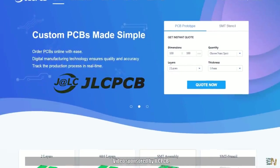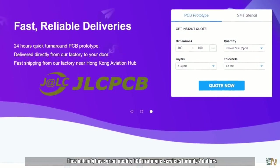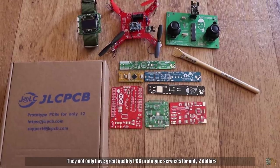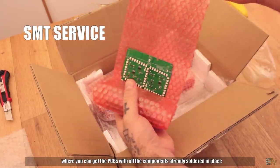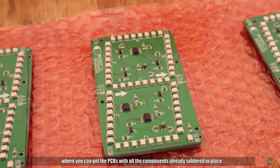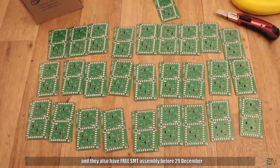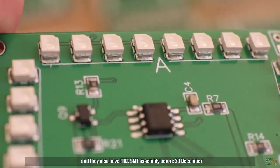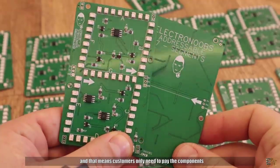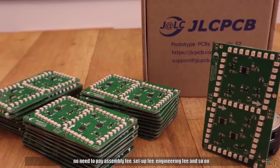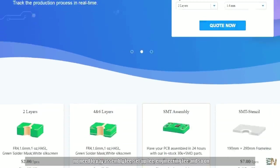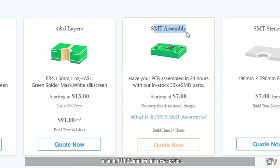Video sponsored by JLCPCB, they not only have a great quality PCB prototype service for only $2, but now they also have a great SMT service where you can get the PCBs with all the components already soldered in place and they also have free SMT assembly before 29th December and that means that the customer only needs to pay the components, no need to pay assembly fees, setup fees, engineering and so on. So, go to jlcpcb.com and try this new service.